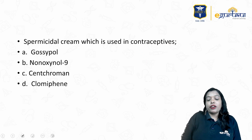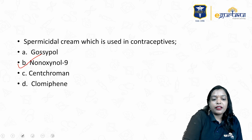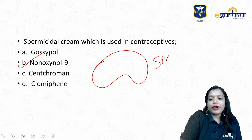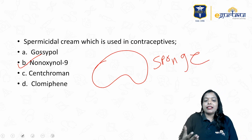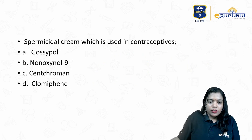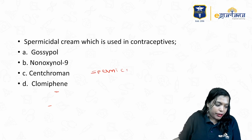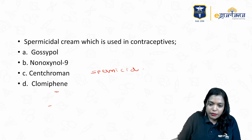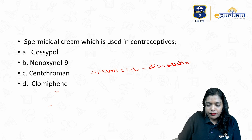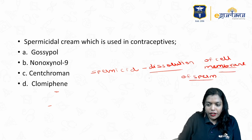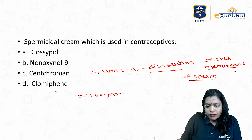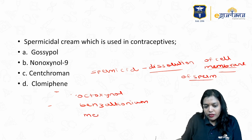MCQ 5: The spermicidal cream used in contraceptives is nonoxynol-9. Nonoxynol-9 is usually used in the contraceptive sponge — sperms are absorbed into the sponge and it releases nonoxynol-9 to kill them. Spermicide mainly acts by dissolution of the cell membrane of the sperm. Other spermicides include octoxynol, benzalkonium, and menfegol.